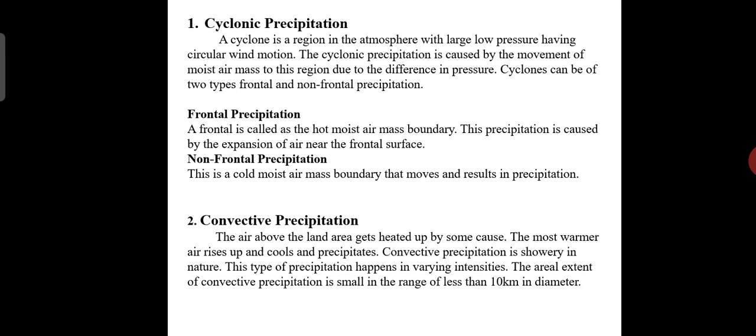Cyclonic precipitation. A cyclone is a region in the atmosphere with large low pressure having circular wind motion. The cyclonic precipitation is caused by the movement of moist air mass to this region due to the difference in pressure. Cyclones can be of two forms: frontal and non-frontal precipitation.